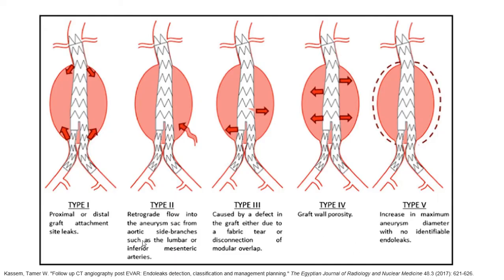There are five types of endoleak. Type 1: proximal or distal graft attachment site leaks. Type 2: retrograde flow into the aneurysm sac from the aortic side branches, such as the lumbar or inferior mesenteric artery — in this case we see a leak from the lumbar artery. Type 3: caused by a defect in the graft, either due to a fabric tear or disconnection of the modular overlap. Type 4: graft porosity. Type 5: increase in maximum aneurysm diameter with no identifiable endoleak.